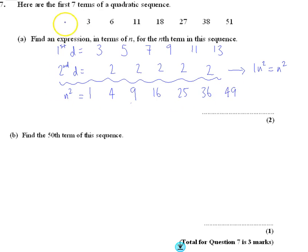Then if we take away n squared from our original sequence, 3 minus 1 is 2, 6 minus 4 is 2, 11 minus 9 is 2, and every time it's going to be 2 in this case. So this bit leaves us to be just, the nth term of that is just 2, so the overall nth term of everything is just n squared plus 2.